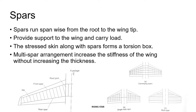The volume in between the front and the rear spar can be used to store fuel on board. The leading and the trailing edge in reality don't carry any load — they are just there to provide the aerodynamic shape and to carry the electrical cables, control wires, push rods and other hydraulic pipes.